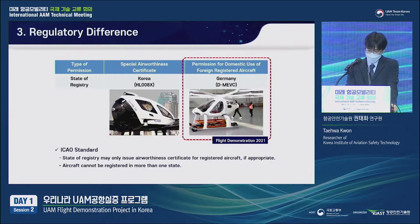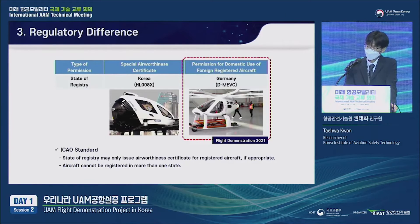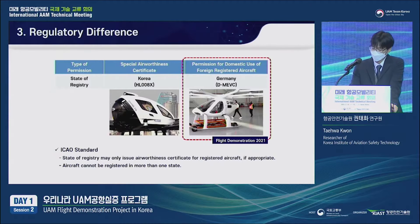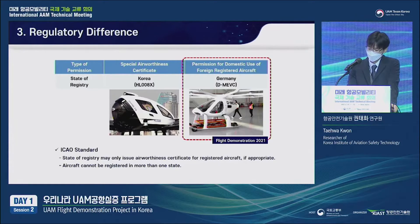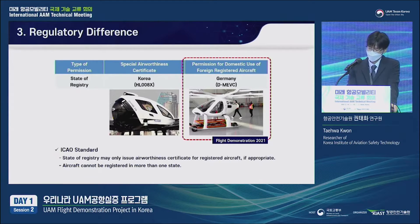I cannot explain every single detail about the certification process under the Korean Aviation Safety Act. In short, if you have an aircraft registered in Korea, you can apply for an airworthiness certificate, including a special airworthiness certificate. As you can see from the photo, the Volocopter has an HL number on its body, which means this aircraft is registered in Korea. Therefore, this aircraft is eligible for an airworthiness certificate.